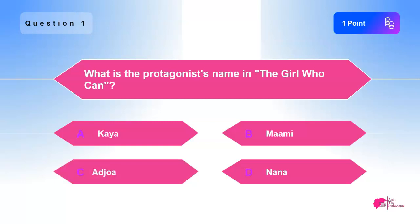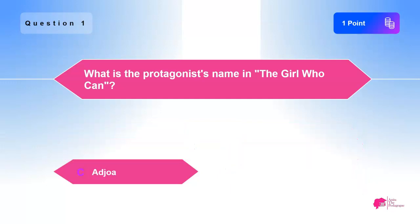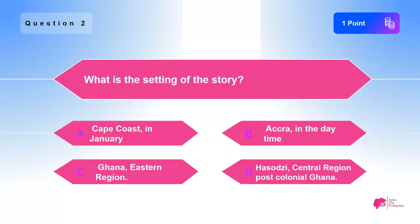The answer is C) Ajwa. Question two: What is the setting of the story? A) Kept Coast in January, B) Accra in the daytime, C) Ghana Eastern Region, D) Hassoji Central Region, postcolonial Ghana.